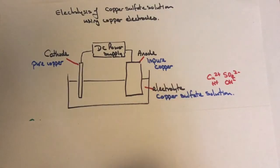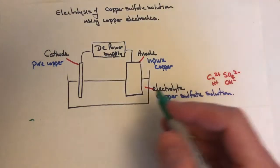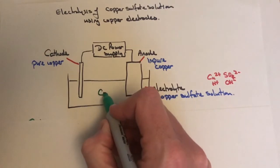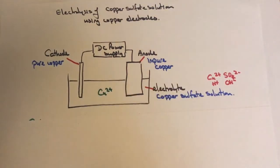What's going to happen in this reaction? When we turn the electricity on, we've got copper ions. At the cathode, the least reactive material will react first.